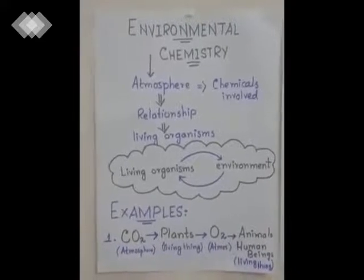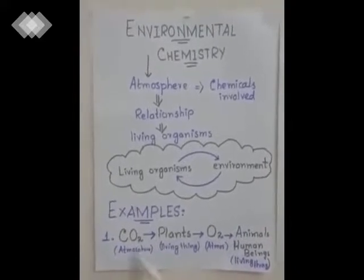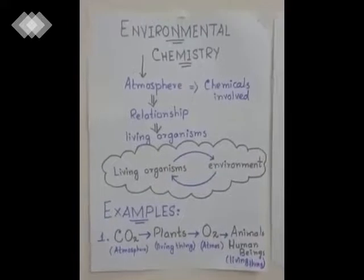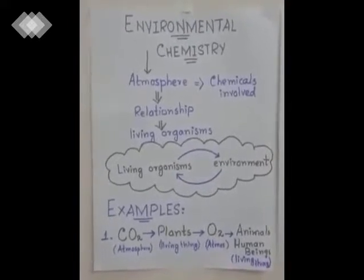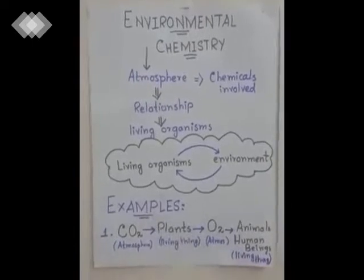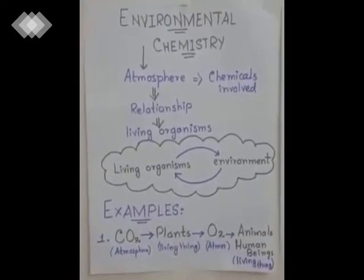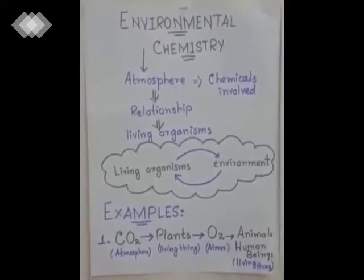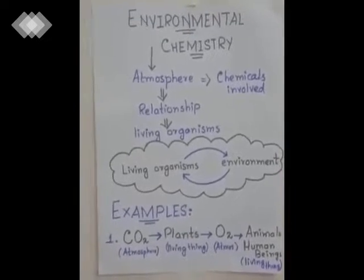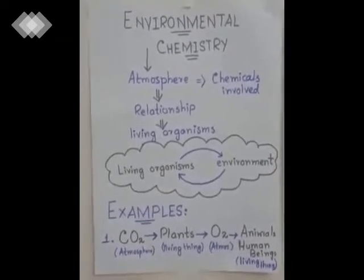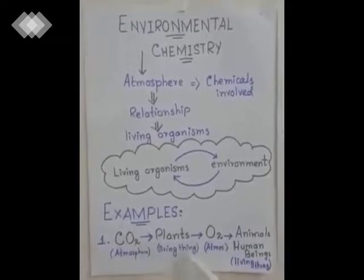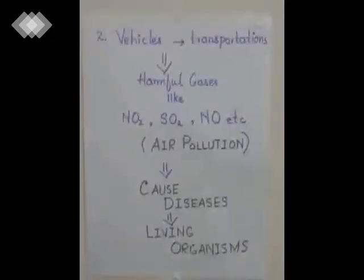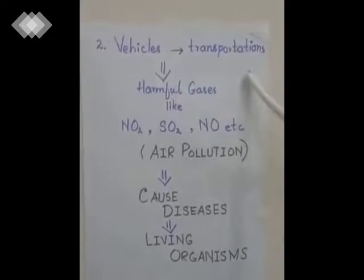A simple example: carbon dioxide present in the atmosphere is taken by plants, which are living organisms. The plant converts carbon dioxide into oxygen gas and releases it into the atmosphere. That oxygen is then taken up by animals and human beings. This shows how the atmosphere impacts living organisms and how living organisms impact the atmosphere.